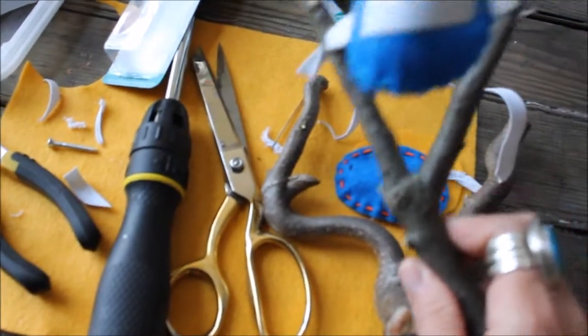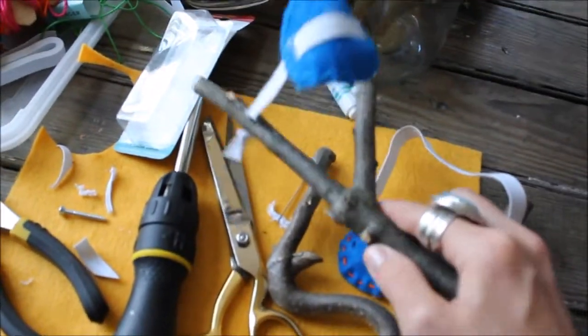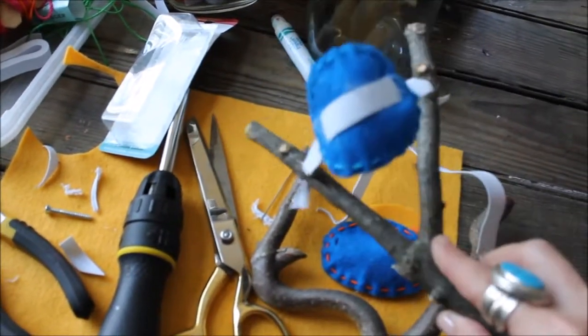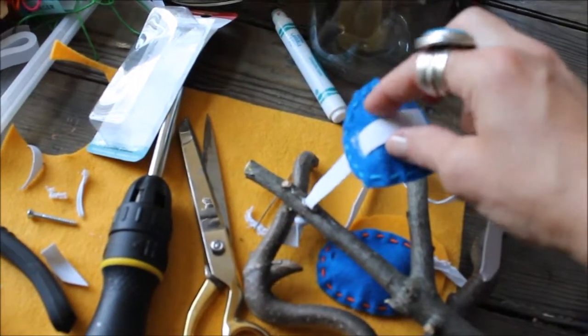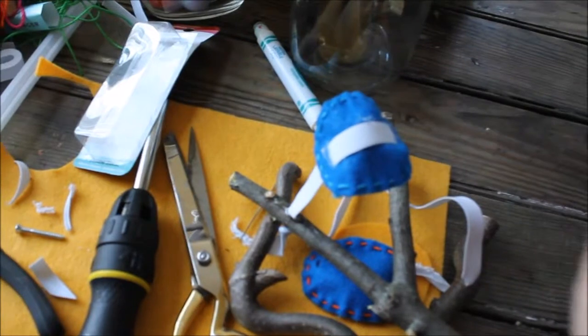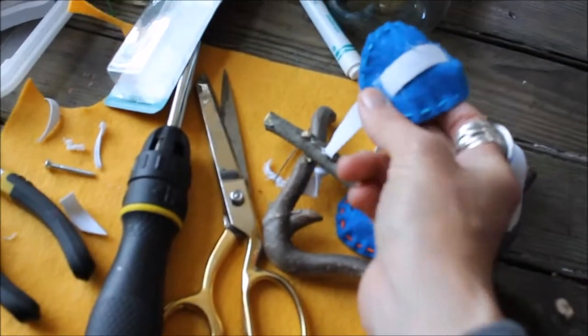After you have it assembled, basically the last step is to have your hot glue gun ready and to glue the whole thing down. You want to glue this part. Don't skimp on the hot glue. Make sure all the edges are hot glued down.